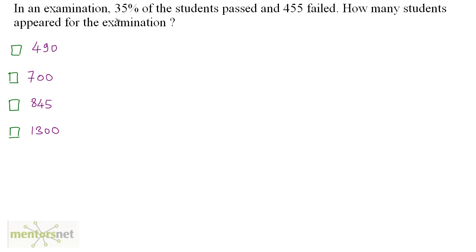In an examination, 35% of the students passed and 455 students failed. How many students appeared for the examination? Let the total number of students who appeared be x. The number who passed plus the number who failed equals the total, so x equals the number passed plus the number failed. The number passed is 35% of total students, which is 35/100 times x.